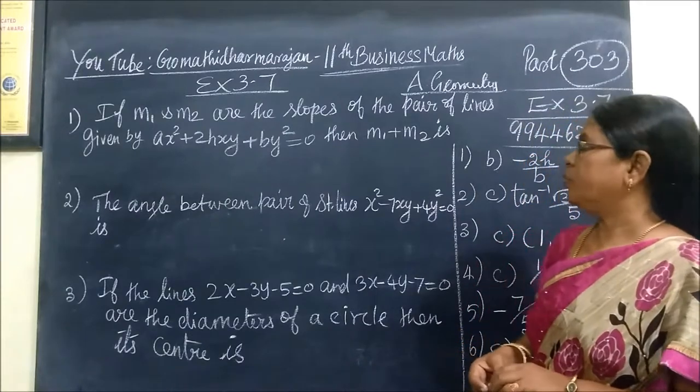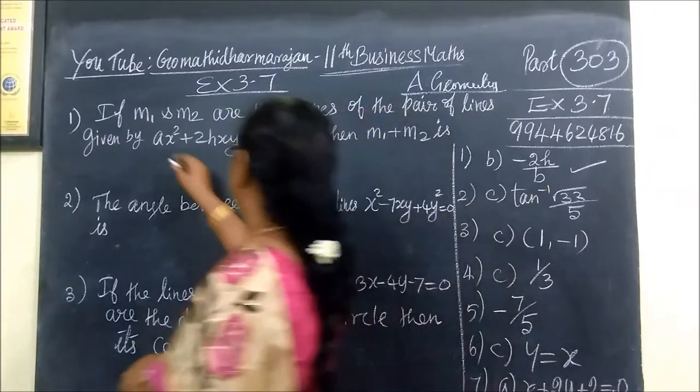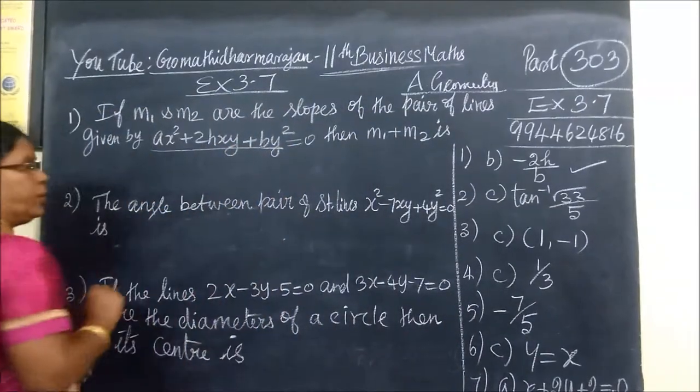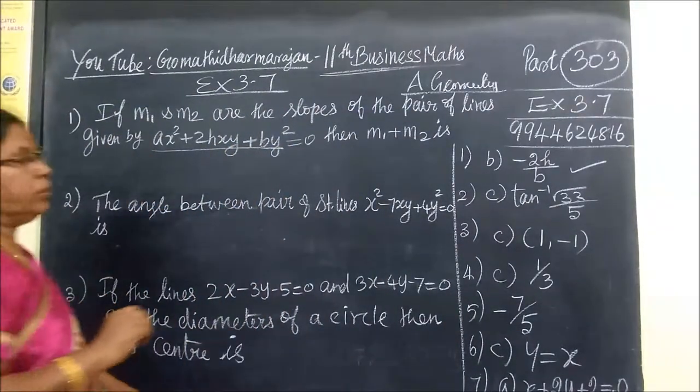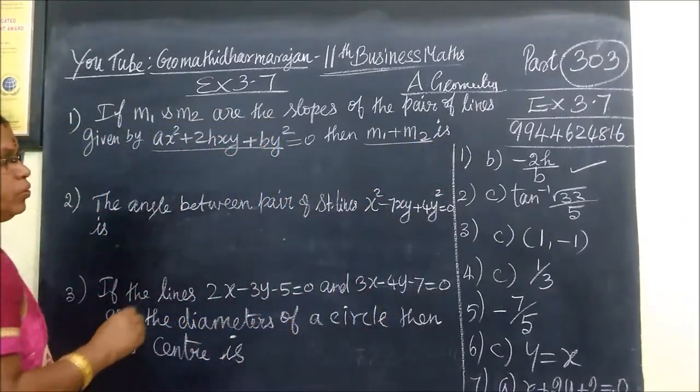If M1 and M2 are the slopes of the pair of straight lines given by A·X² + 2H·XY + B·Y² = 0, then M1 + M2, sum of the slopes.